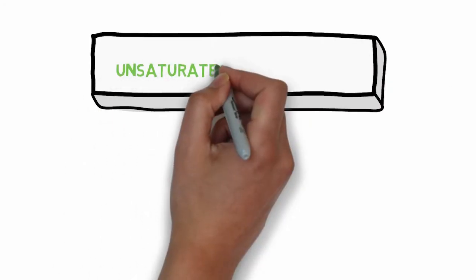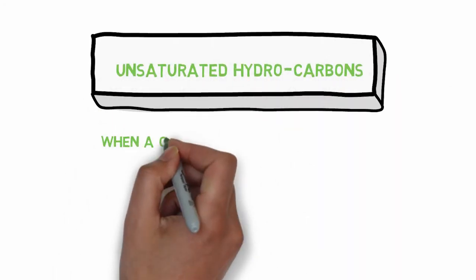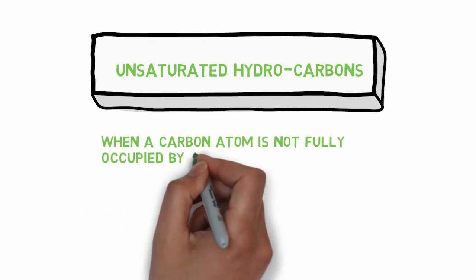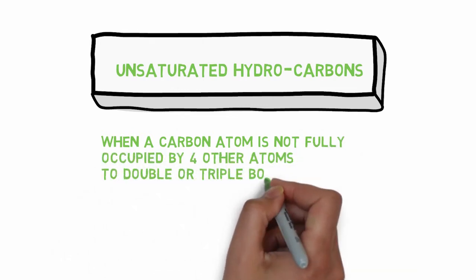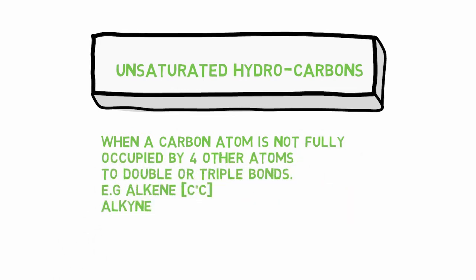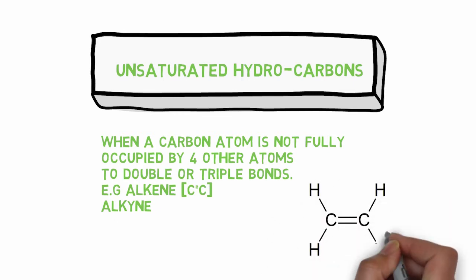Unsaturated hydrocarbons are those where a carbon atom is not fully occupied by four other atoms, due to double or triple bonds. Alkenes have a carbon-carbon double bond, and alkynes have a carbon-carbon triple bond. In unsaturated hydrocarbons, double or triple covalent bonds are present. This is the key difference between saturated and unsaturated hydrocarbons.